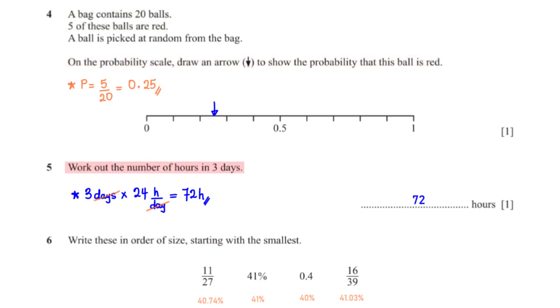Work out the number of hours in three days. There are 24 hours in a day, so for three days we multiply 3 by 24, which gives us 72 hours.